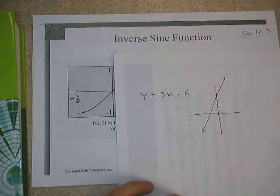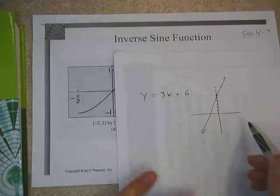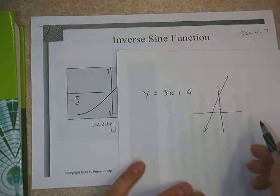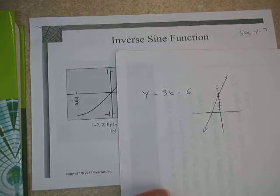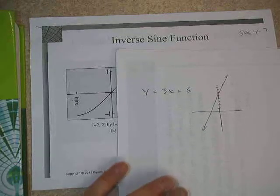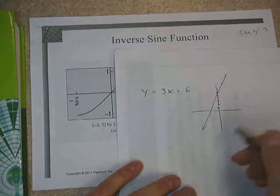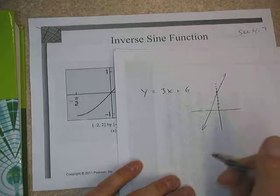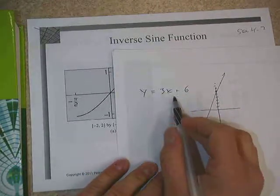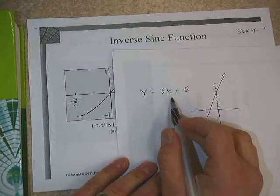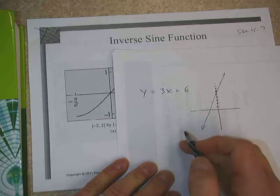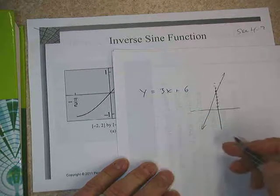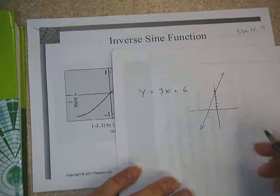Remember, it has to pass the vertical line test in order to be a function. In order to be a 1-to-1 function, it has to pass the horizontal line test, which this one does both. And remember, what inverses do is they essentially undo each other. So if I knew the inverse of this function, if I were to plug an x into this and get a y out, and I take the y and put it into the inverse, I'd get back to the same x that I started with.